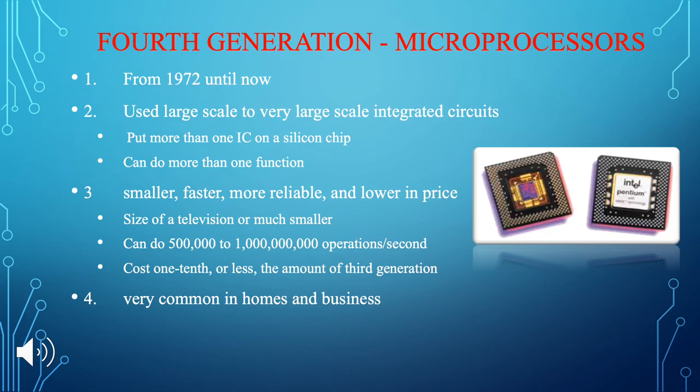The fourth generation is the microprocessor, built from 1972 until now. It uses large-scale to very large-scale integrated circuits, putting more than one IC on a silicon chip and capable of performing more than one function. It's smaller, faster, more reliable, and lower in price — the size of a television or much smaller. It can do 500,000 to 1 billion operations per second and costs one-tenth or less the amount of third generation computers. It's very common in homes and businesses.